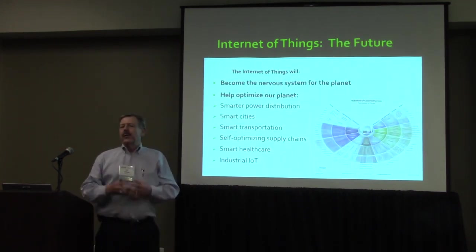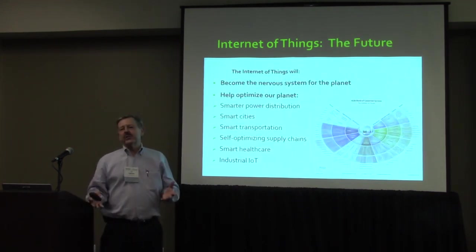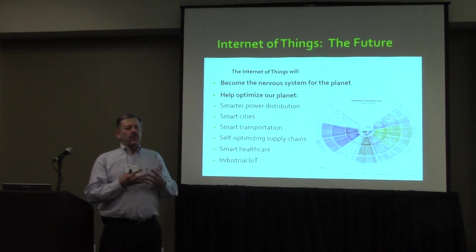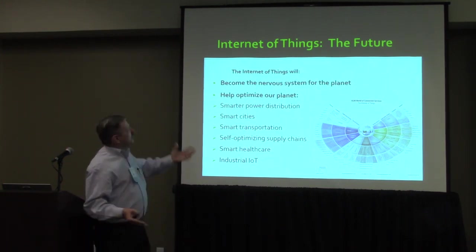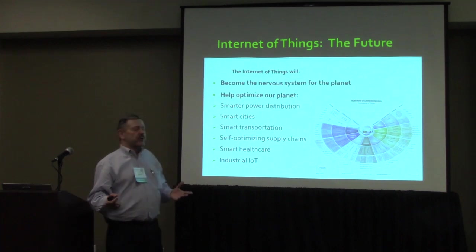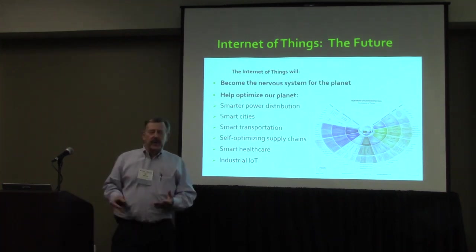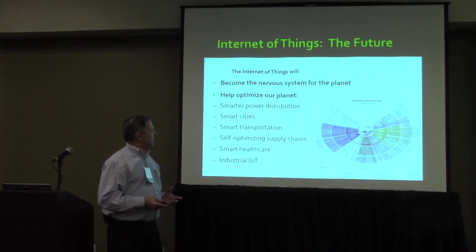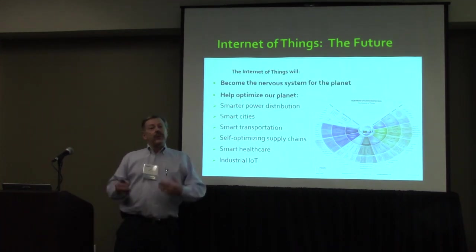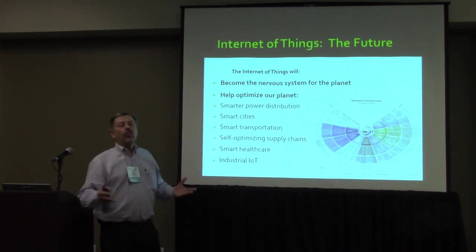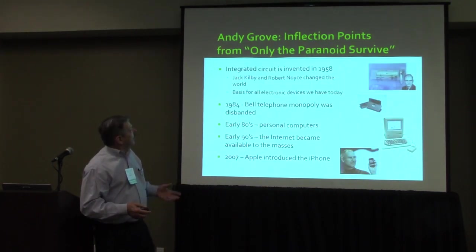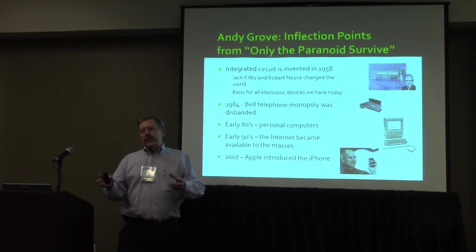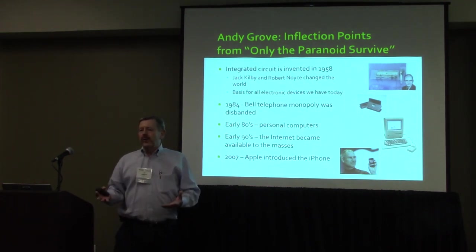The Internet of Things is going to become the nervous system of the world. We're going to add intelligence to all sorts of things: our distribution systems, our cities, our transportation systems, our supply chains, health care, and then the industrial Internet of Things — Industry 4.0, they call it. This is going to be an inflection point in the world.